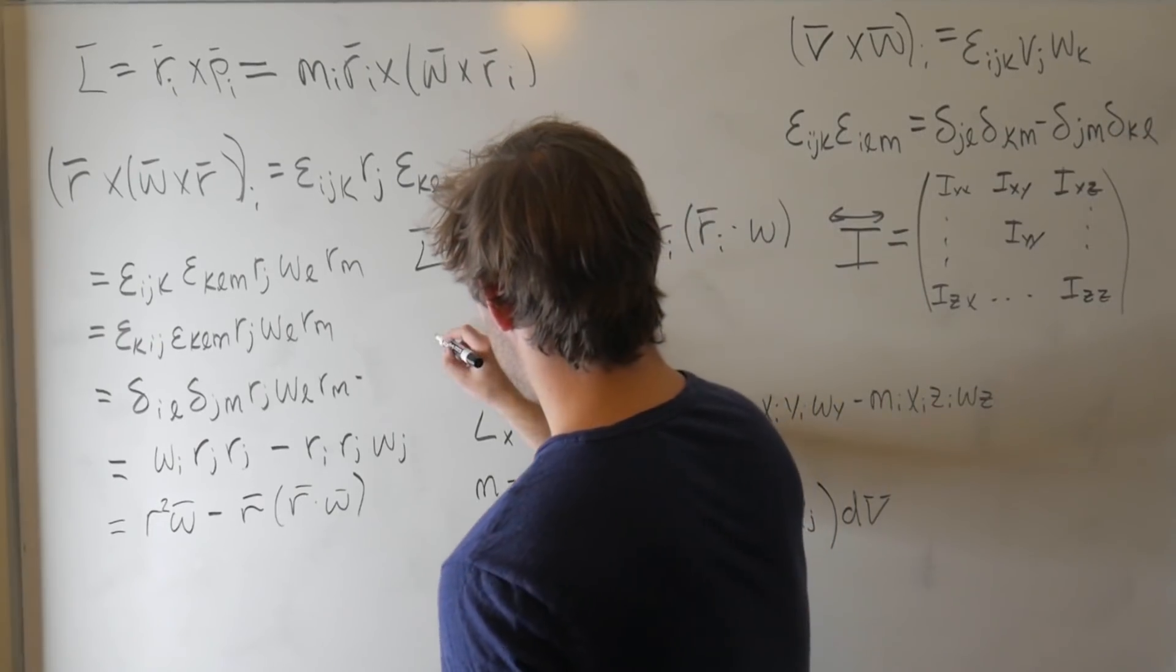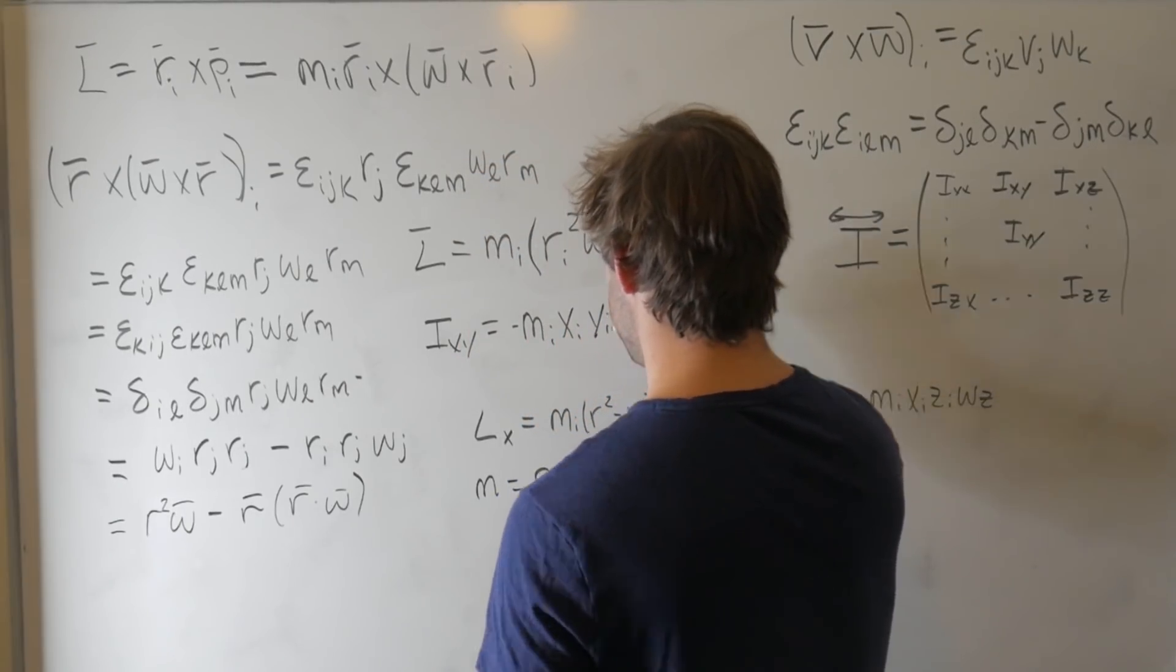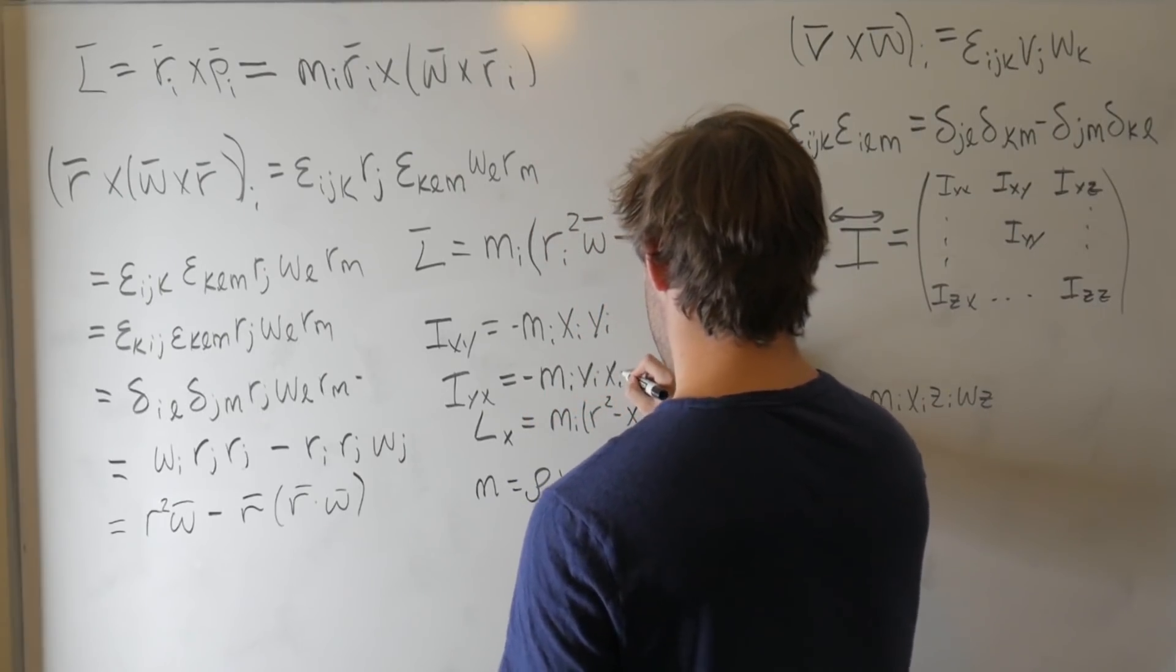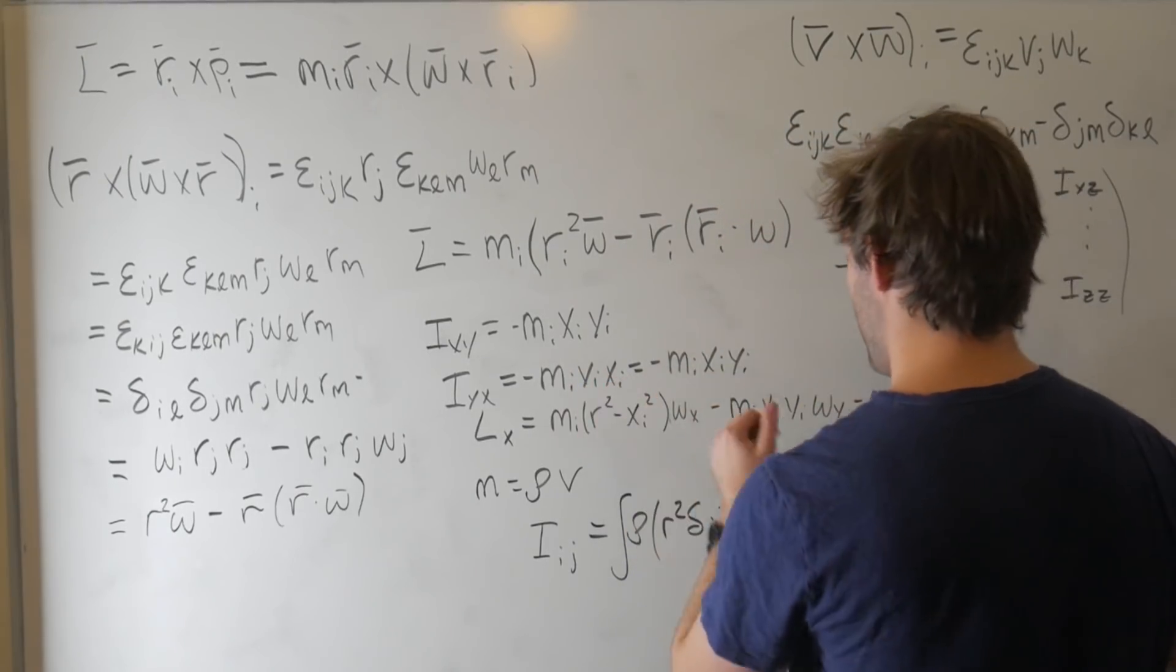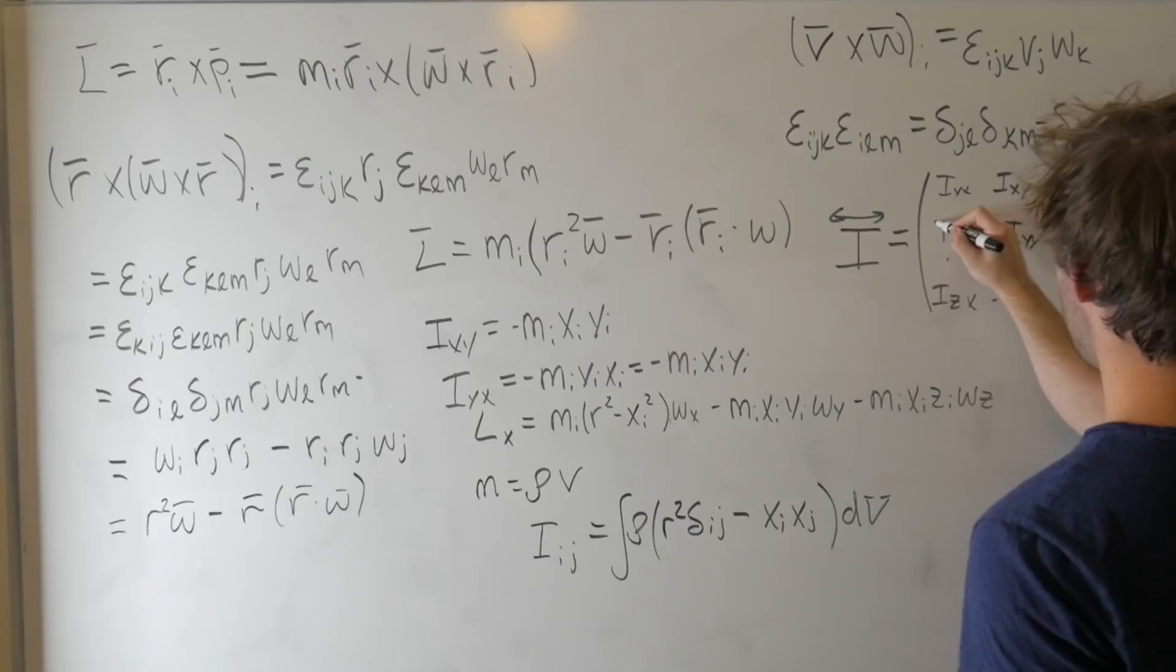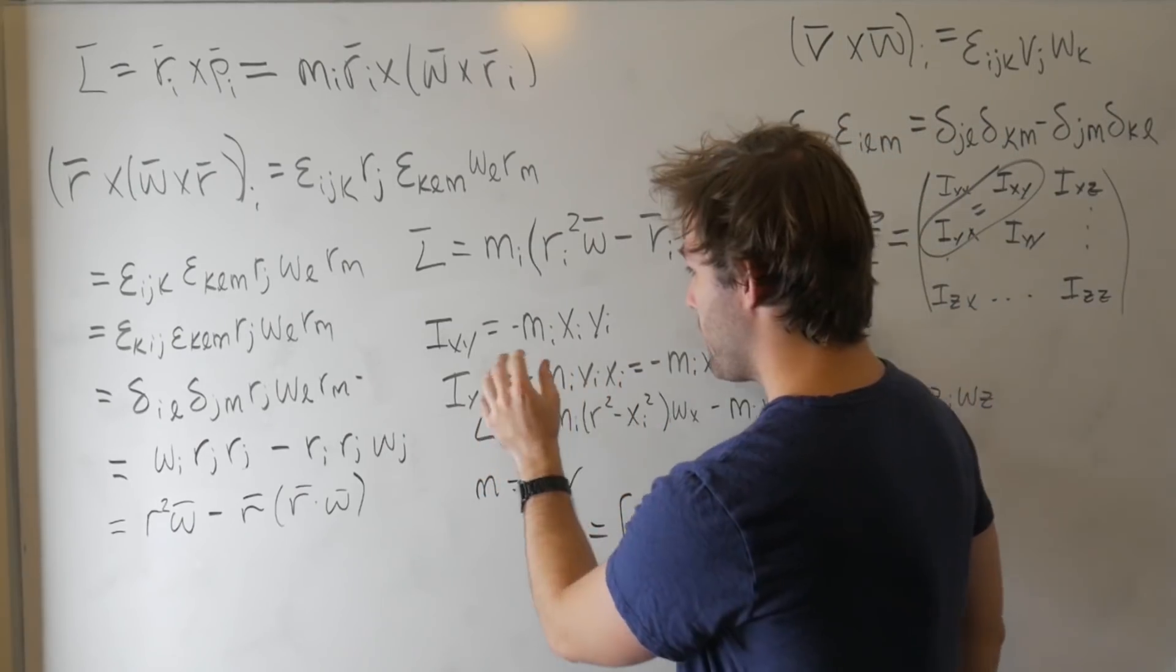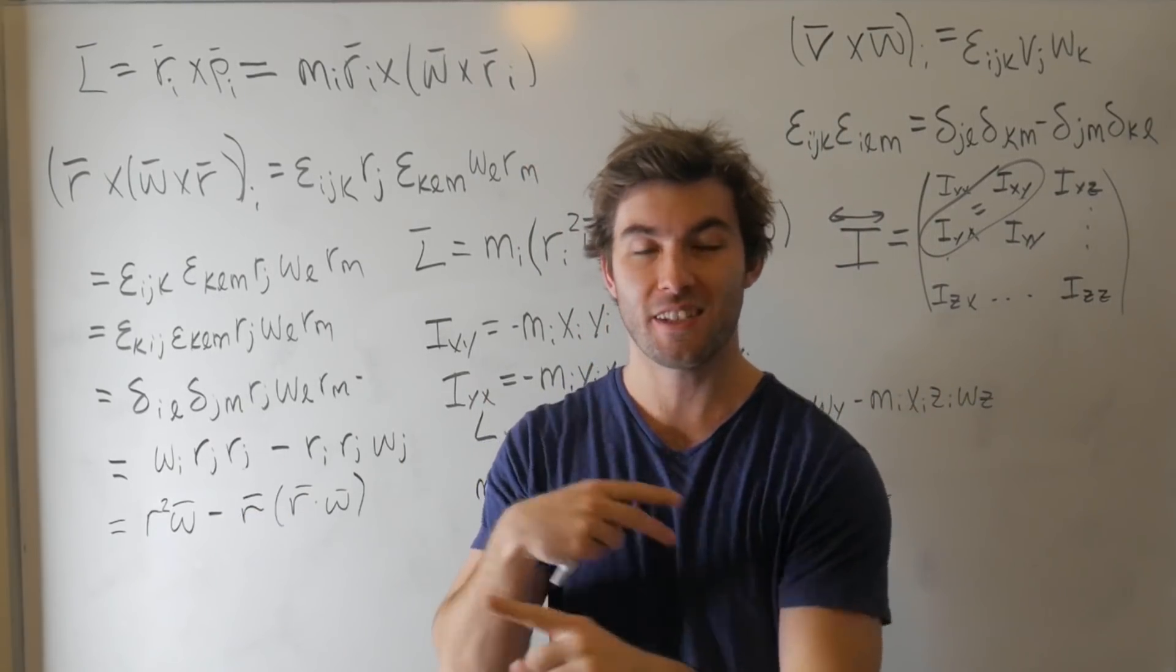One last thing that I want to point out is some properties of this inertia tensor. Namely, we showed that I_xy is just minus sum of m_i x_i y_i. If we were to calculate I_yx, that would just equal minus sum of m_i y_i x_i, which is equal to minus sum of m_i x_i y_i, because these are just numbers, these are just components of the vector. So what that tells you is that I_xy and I_yx are equal. And this will happen for all of your components where you just switch rows with columns. And whenever you have a matrix slash tensor that does this, you can call it a symmetric tensor. So it means if you switch the rows and columns, you get the same thing.